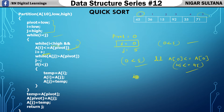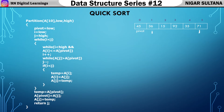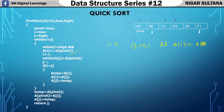Earlier i was zero, now it is incremented to one. In the diagram, i was pointing to index zero and is now pointing to index one. Running the while loop again: is 1 less than 5? Yes. Is a[1]=36 less than or equal to a[pivot]=45? Yes — both true, so increment i again. I was one, now it becomes two.